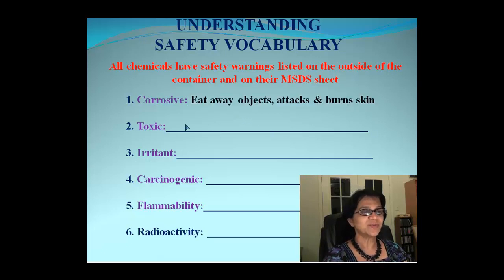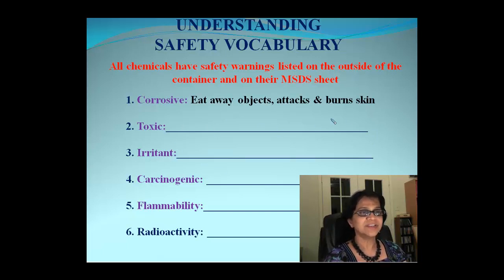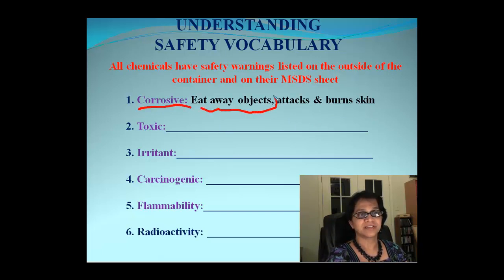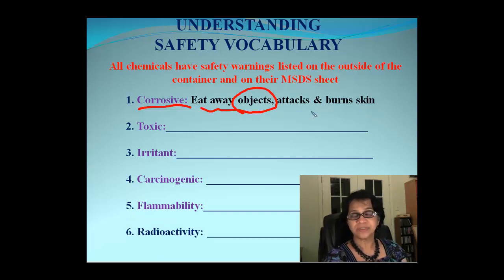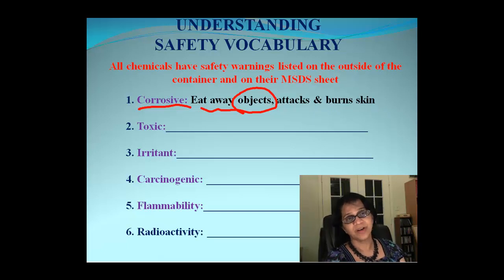The first one is corrosive. Corrosive is the substance which eats away objects including the skin — it can attack or burn the skin. You have to be very careful when we use corrosive substances in our lab.